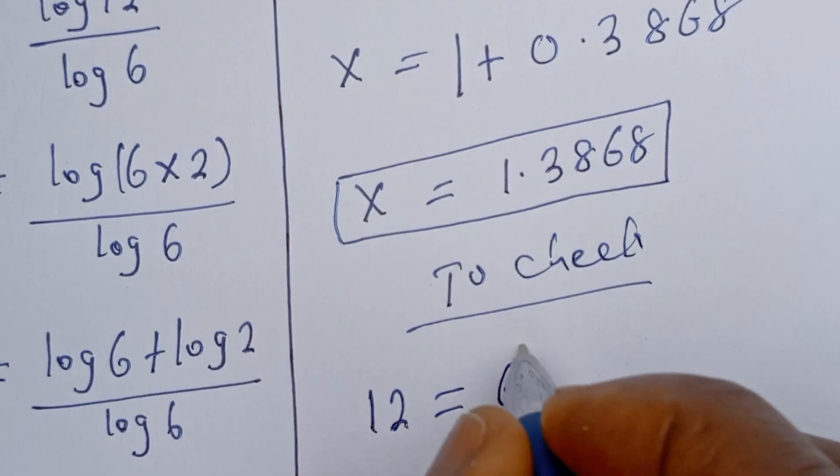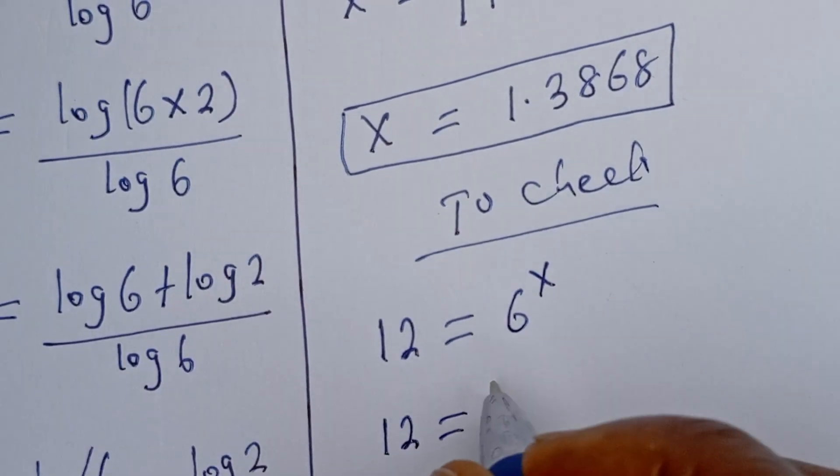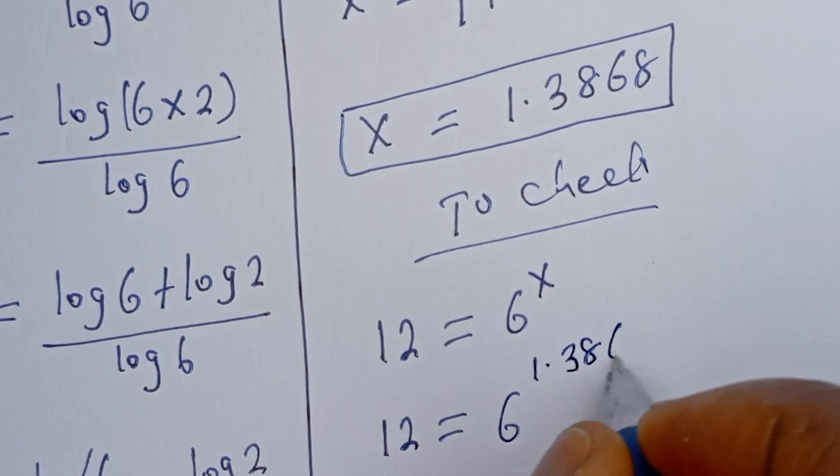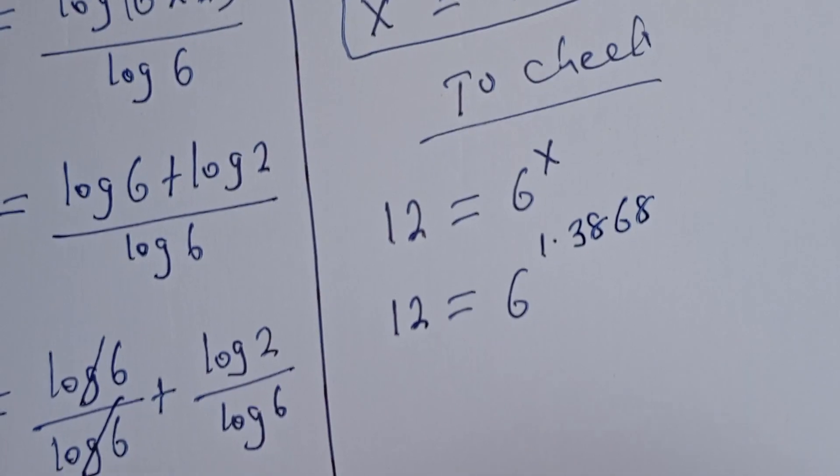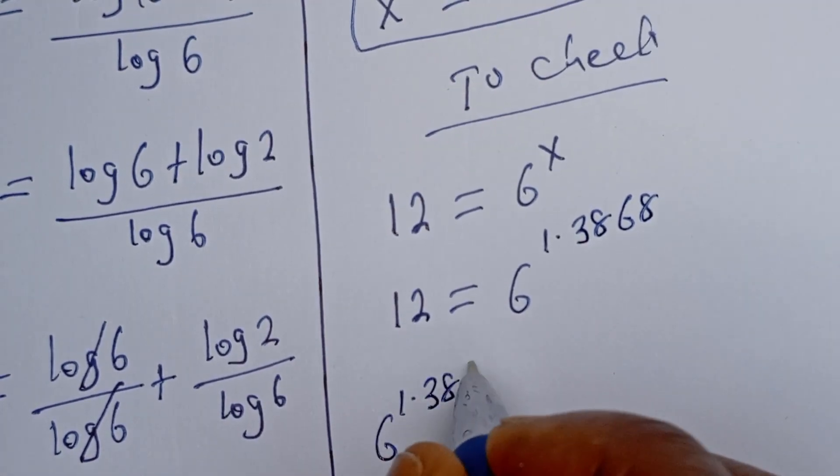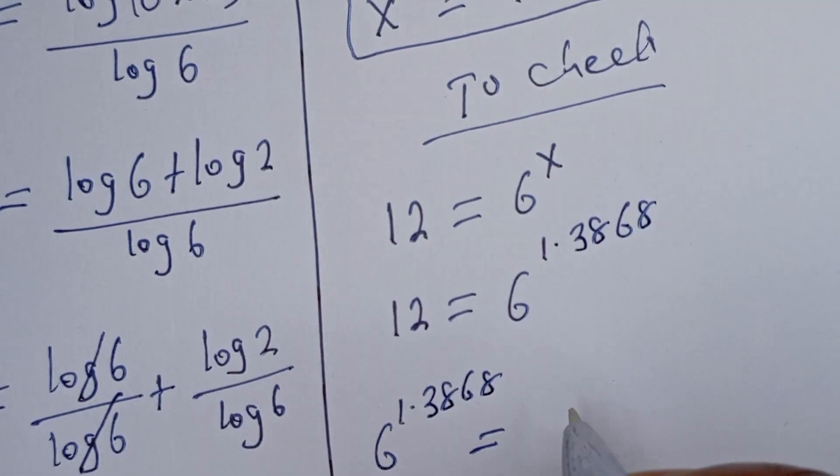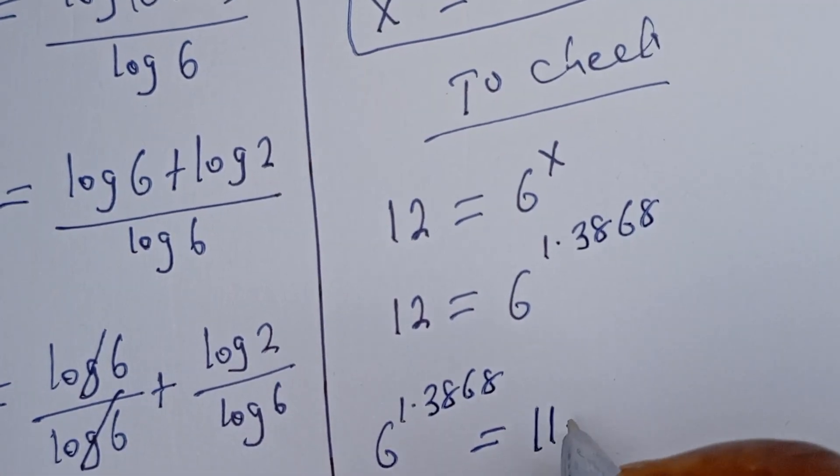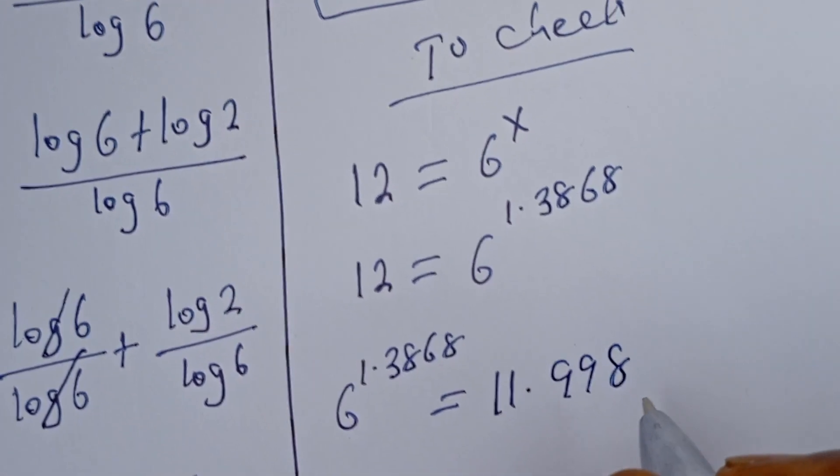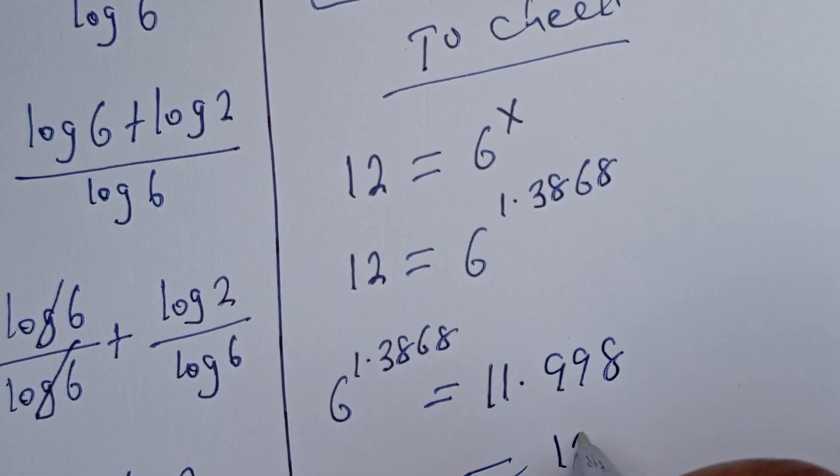12 is equal to 6 to the power of x. Then 12 is equal to 6 to the power of 1.3868. Then 6 to the power of 1.3868 is equal to 11.998, which is approximately 12.